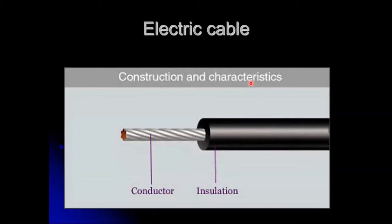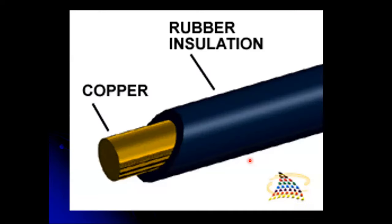This is electric cable. Electric cable is made up of conductor and insulator. The wire in the cable is electrical conductor. And the black part that covers the wire is insulator which is made up of rubber.